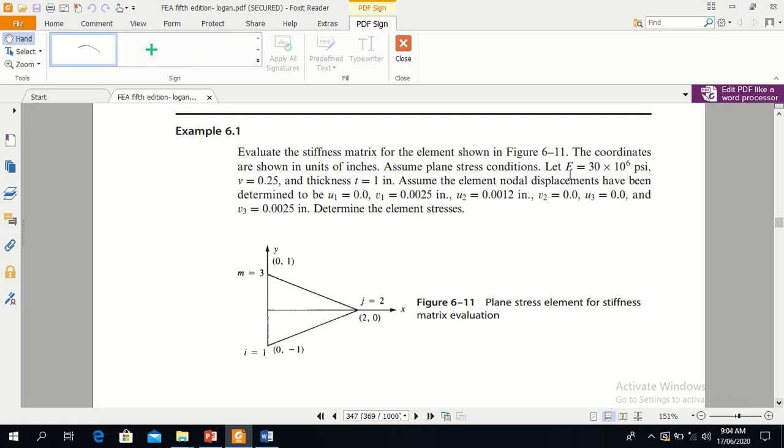Now E, Young's modulus value and Poisson ratio is given, and the thickness is 1.